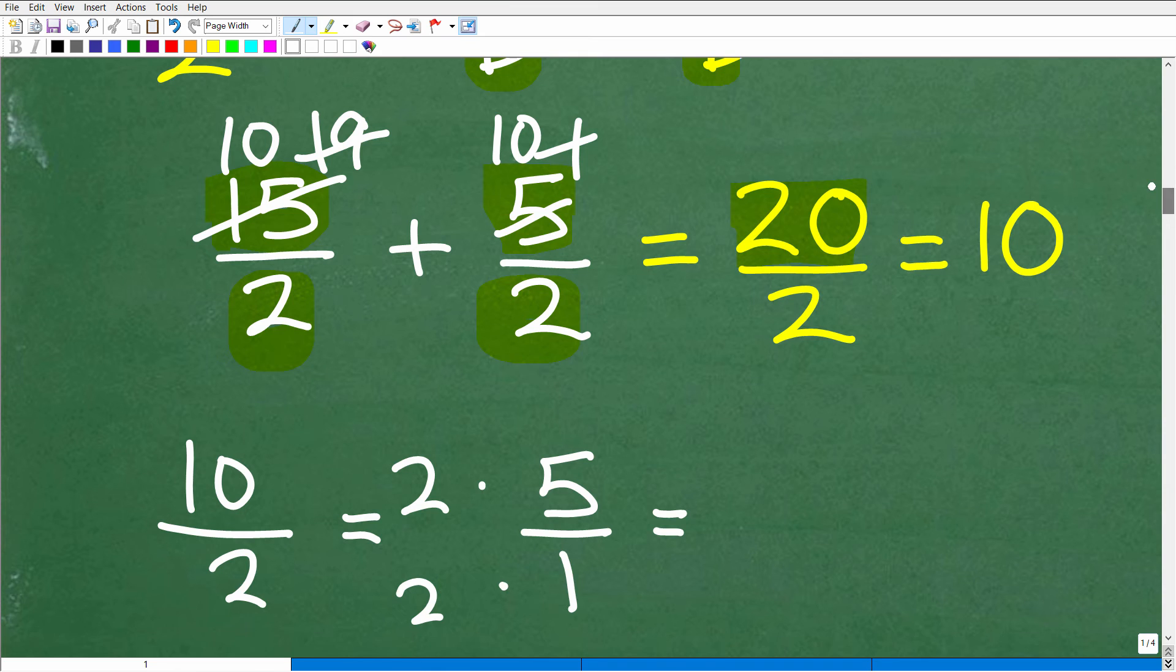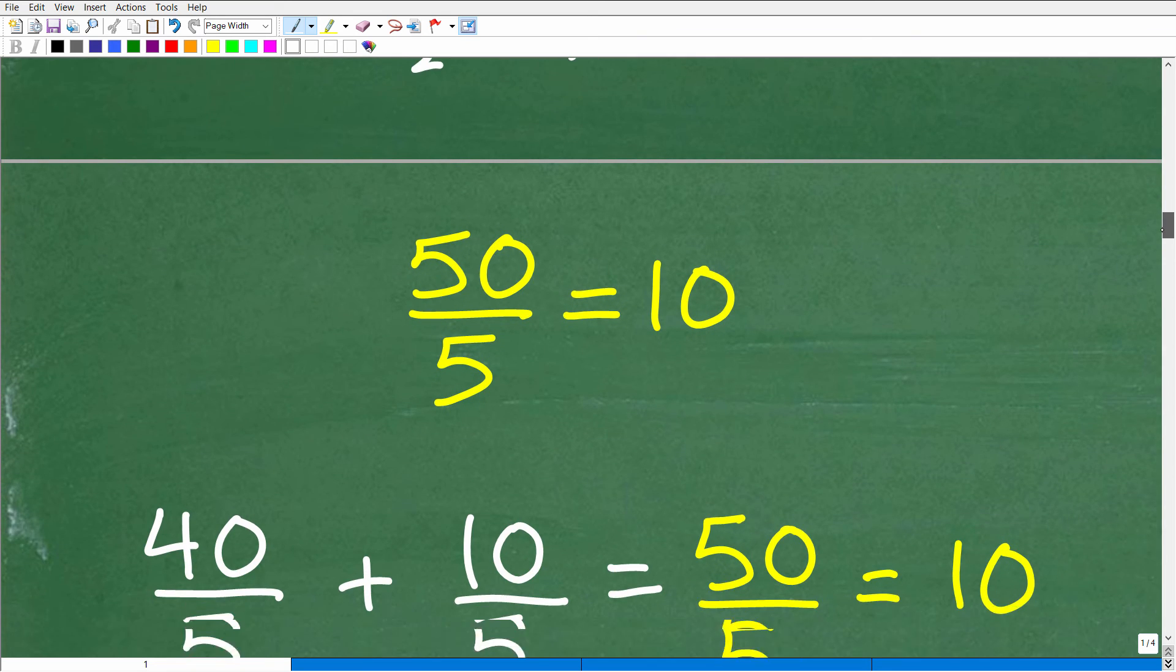All right. So let's take a look at another example. But let's finish up here. So here, 15 and 5 is 20. 20 divided by 2 is 10. So those, of course, would be two fractions that add up to 10.